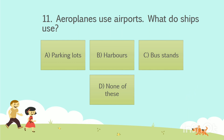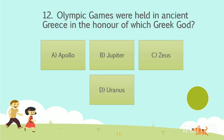The answer is Option B: Harbors. Question number 12. Olympic games were held in ancient Greece in the honor of which Greek god? Option A: Apollo. Option B: Jupiter. Option C: Zeus. Option D: Uranus. Your time starts now.